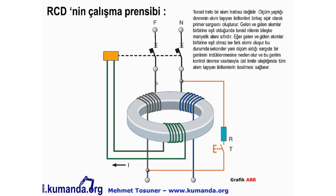İki kutuplu bir RCD'de faz ve nötr, toroid içerisinden geçtikten sonra çıkışlara verilir; sekonder sargıda ölçüm alınır. Normal şartlarda fazdan gelen ve nötrden dönen akımlar eşit olduğunda bileşke manyetik alan sıfırdır. Akımlar arasında fark oluştuğunda sekonder sargıda gerilim indüklenir; üst limitlere ulaştığında açtırma mekaniği tetiklenerek faz ve nötr iki kutuplu birlikte kesilir.